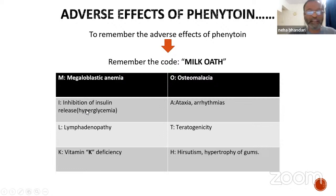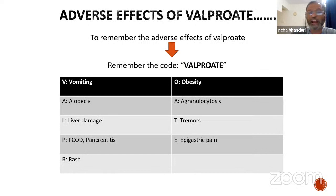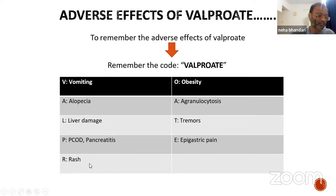CNS pharmacology: adverse effects of phenytoin mnemonic: 'MILK or AOPH' — M = megaloblastic anemia (B12 deficiency), I = inhibition of insulin release (hyperglycemia), L = lymphadenopathy, K = vitamin K deficiency, O = osteomalacia, A = ataxia, A = arrhythmias, P = teratogenicity, H = hirsutism and gum hypertrophy. Adverse effects of valproate mnemonic: 'VALPROATE' — V = vomiting, A = alopecia, L = liver damage, P = PCOD (polycystic ovarian disease) or pancreatitis, R = rash.